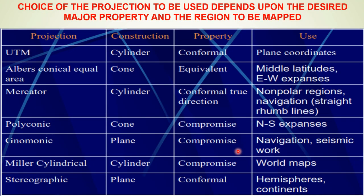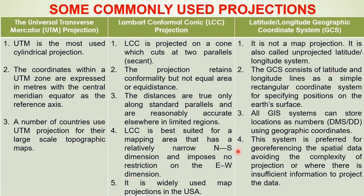Some common projections include UTM, which is a cylindrical projection; polyconic, which is a conic projection; and gnomonic, which is a planar projection. These projections are used based on the desired major properties of the region. This slide discusses some commonly used projections.